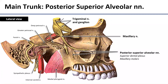Also from the main trunk, we find the posterior superior alveolar nerves. Unlike the mandibular teeth, which were all innervated by that inferior alveolar nerve, the maxillary teeth are innervated by three separate nerves. The posterior superior alveolar nerve leaves the main stem of the maxillary nerve, enters into the maxilla and travels into the alveolar process, where it participates in what's called the superior dental plexus. From that plexus, little fibers go out to individual teeth — specifically, the three maxillary molars.